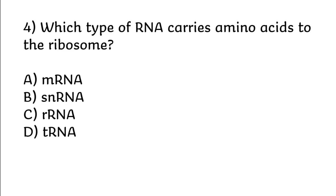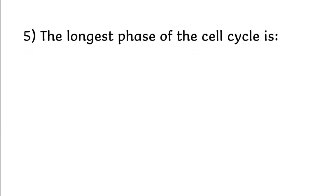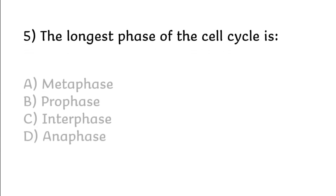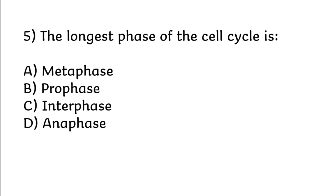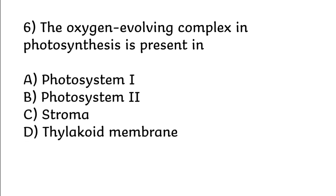The longest phase of the cell cycle is: metaphase, prophase, interphase, anaphase. Correct answer is option C: interphase. The oxygen-evolving complex in photosynthesis is present in: photosystem one, photosystem two, stroma, thylakoid membrane.